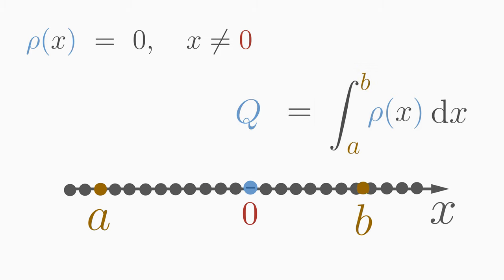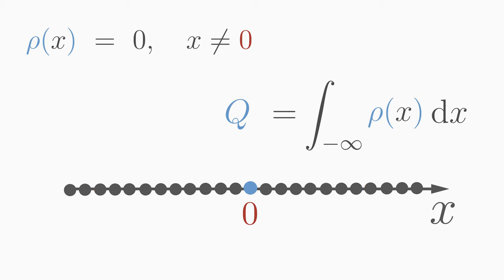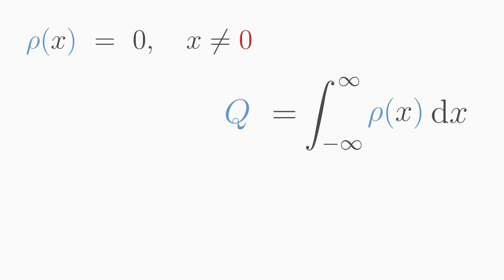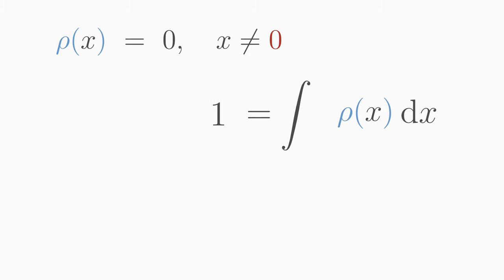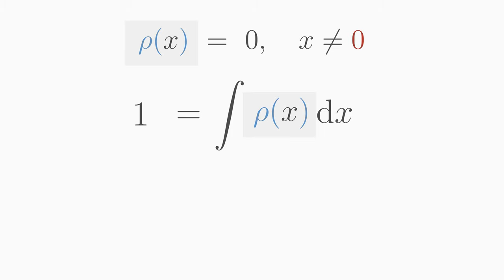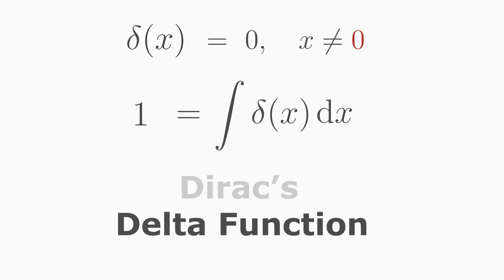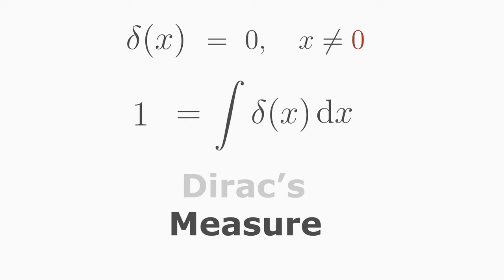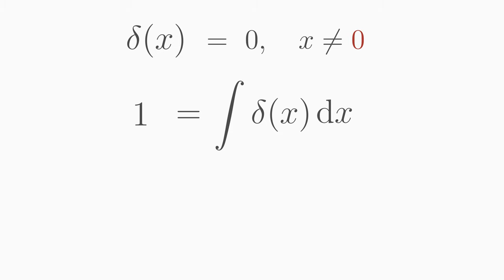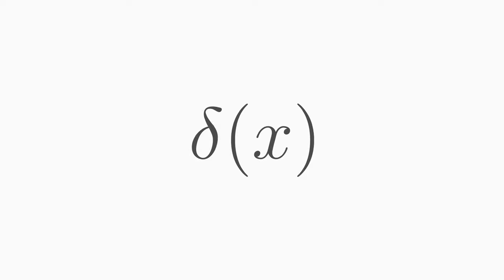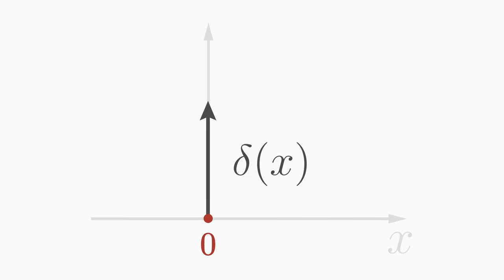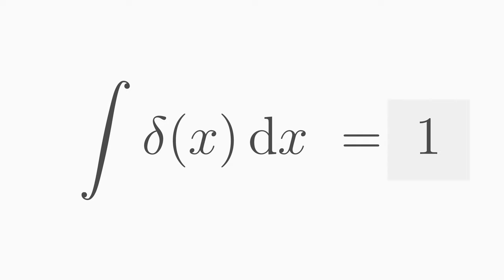Let's always include the charge Q by choosing integration limits from minus infinity to plus infinity. If we normalize the charge to Q equals one and consider these two properties, we write this density with a Greek delta and call it Dirac's delta function. Even if the name may suggest otherwise, the delta function is mathematically not a function but another mathematical object, understood for example as a so-called distribution or as a Dirac measure. The delta function is illustrated with an arrow at the position of the point charge, with the arrow height representing the value of the integral — in this case, one.